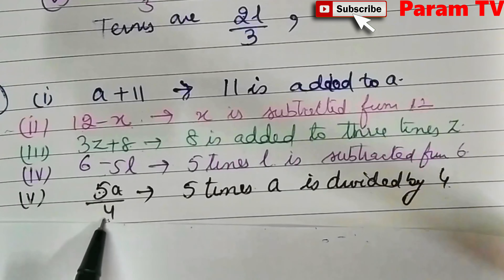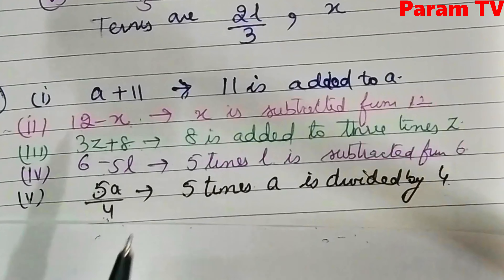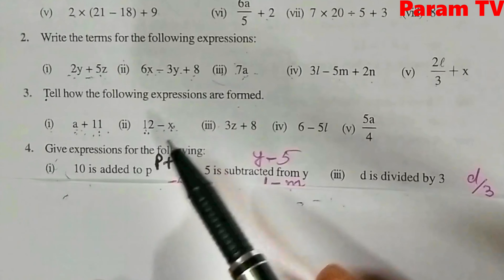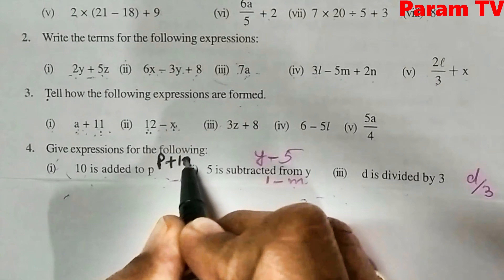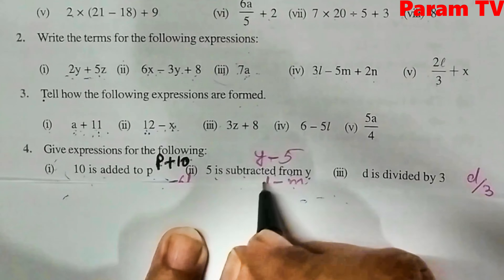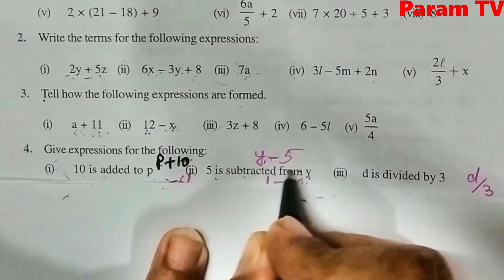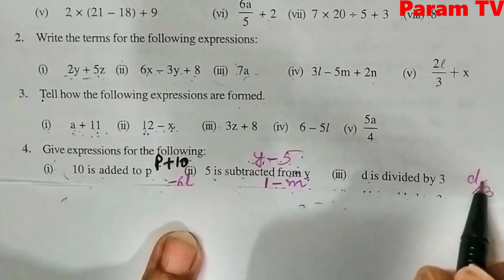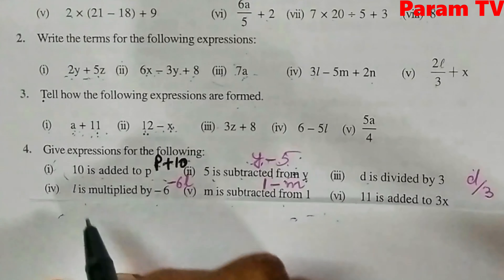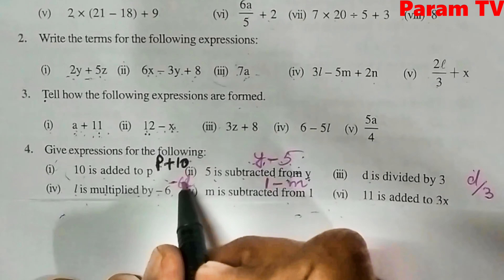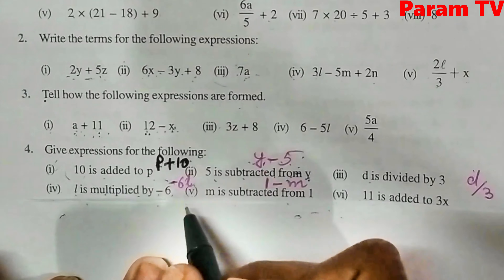Question number 4: give expressions for the following. 10 is added to P — answer: P plus 10. 5 is subtracted from Y — the term it is subtracted from is written first, so: Y minus 5. D is divided by 3 — answer: D divided by 3. L is multiplied by minus 6 — when multiplying, no sign is written separately, so: minus 6L.